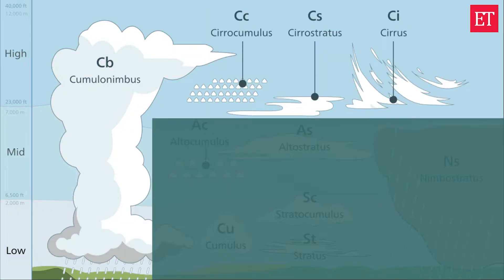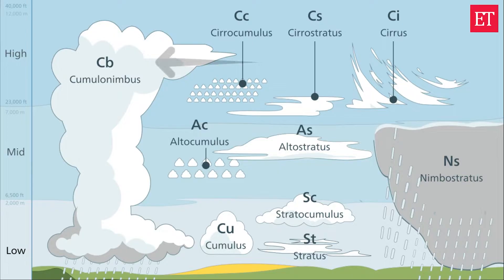The last category of clouds are called high formation clouds, which are clouds situated at a high altitude of 6,000 meters or more above ground level. Examples of high clouds include cirrus, cirrostratus, and cirrocumulus clouds. Mammatus clouds are formed by sinking air within the cumulonimbus cloud that causes the air to cool and condense into these distinctive pouches.